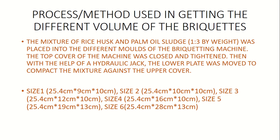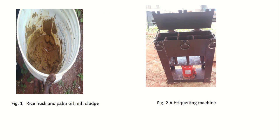The process used cutting different molds of briquette. The mixture of rice husk and oil sludge, mixed in a ratio of 1 to 1 by weight, was placed into the different molds of the briquette machine. The sub-cover was closed and tightened, then with the help of the hydraulic jack, the lower plate was moved to compact the mixture against the upper cover.